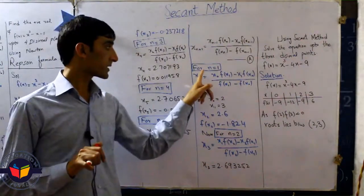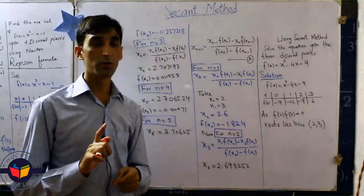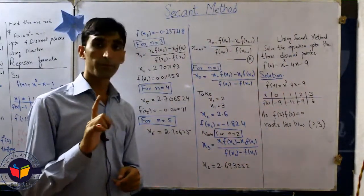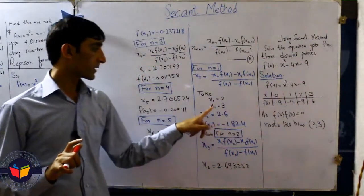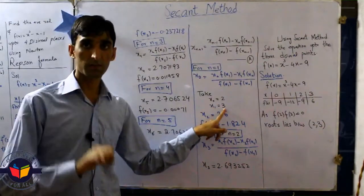Always we take x0 as the value where the function gives us the negative value. And x1 when the function gives us the positive value. That means when we take x1, that means 3 gives us the positive value.